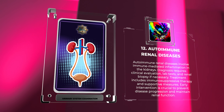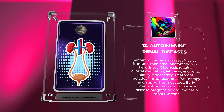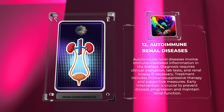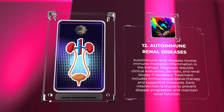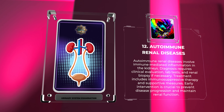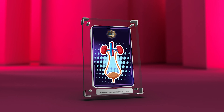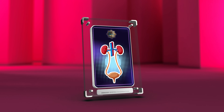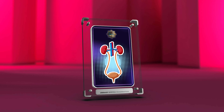Autoimmune renal diseases involve immune-mediated inflammation in the kidneys. Diagnosis requires clinical evaluation, lab tests, and renal biopsy if necessary. Treatment includes immunosuppressive therapy and supportive measures. Early intervention is crucial to prevent disease progression and maintain renal function.